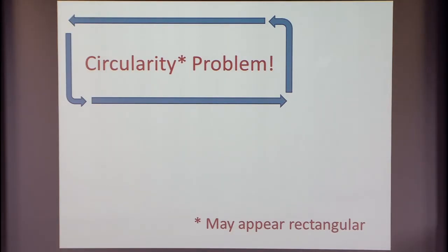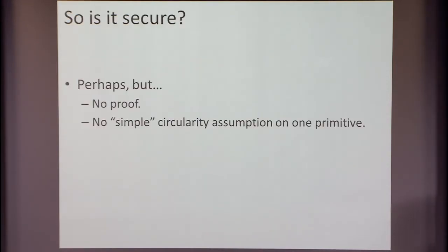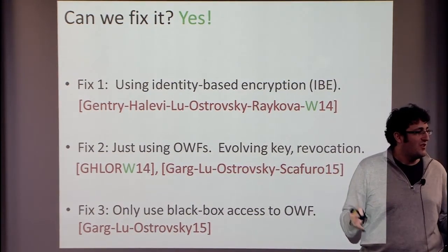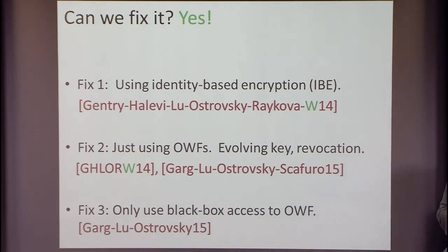Is it actually secure? We don't know. Probably for natural schemes, you won't find an attack, and it sounds secure. But we don't know how to prove it without a circular assumption. Can we fix it? Yes — there's been a series of works proposing various fixes. One fix is to use identity-based encryption. That's the fix I'm going to show you — probably the simplest one. Unfortunately, you need stronger assumptions: for garbled circuits we just need one-way functions, but now you need identity-based encryption.